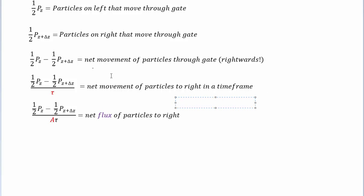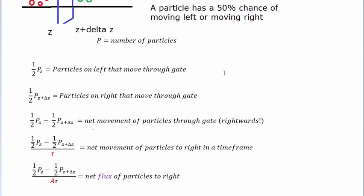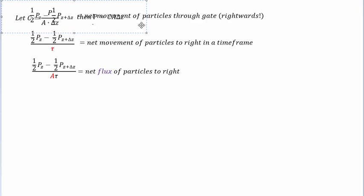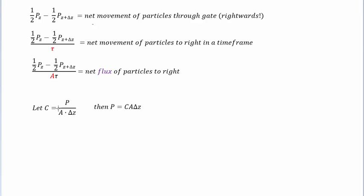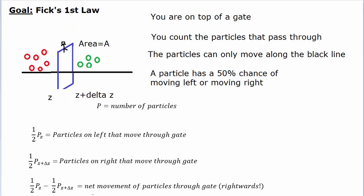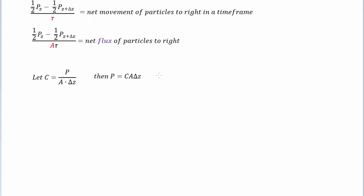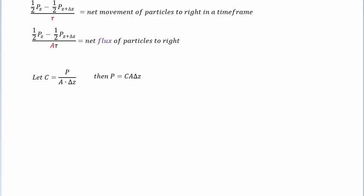Particles aren't something we usually want to work with directly — we usually work with particles per volume, so we introduce concentration as particles per volume. Volume is expressed as the area of the gate times the thickness. With markers at Z and Z plus delta Z, the volume of interest encompasses the area of the gate times the distance delta Z times A. We can express P as C times A times delta Z — if you have a concentration and multiply by the volume, you simply get the number of particles.